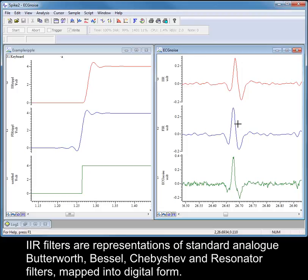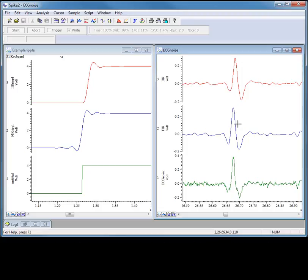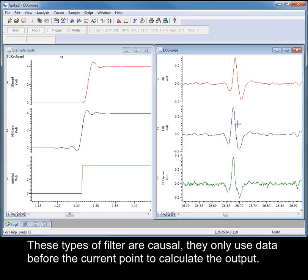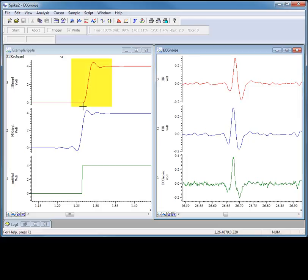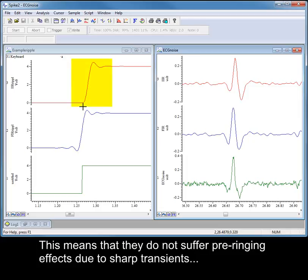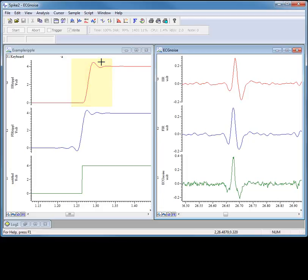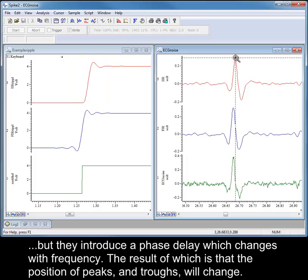IIR filters are representations of standard analogue Butterworth, Bessel, Chebyshev and Resonator filters mapped into digital form. These types of filter are causal, they only use data before the current point to calculate the output. This means they do not suffer pre-ringing effects due to sharp transients. But they introduce a phase delay which changes with frequency, the result of which is that the positions of peaks and troughs will change.